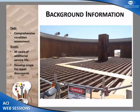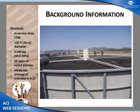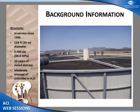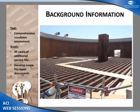Our task was a comprehensive condition assessment of the concrete structure. This is a view of the inside of the trickling filter after the filter media had been removed. The water comes in through the standpipe in the middle and is distributed through rotary equipment. The water trickles down across that media. What you see here are the beams that support the filter media, spaced at two feet on center. The entire substructure is concrete.